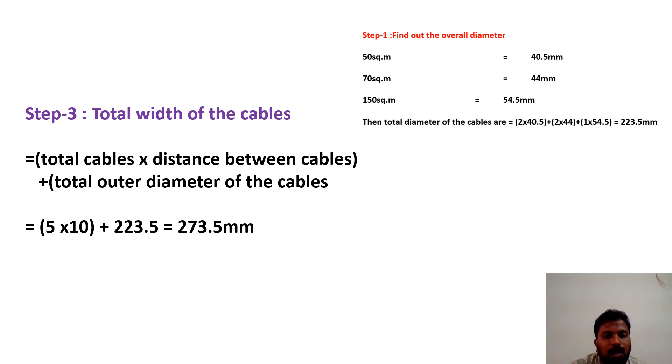Plus total outer diameter of the cables. From step 1, I will get 223.5mm. Total overall diameter is 273.5mm. This is our total width of the cables.